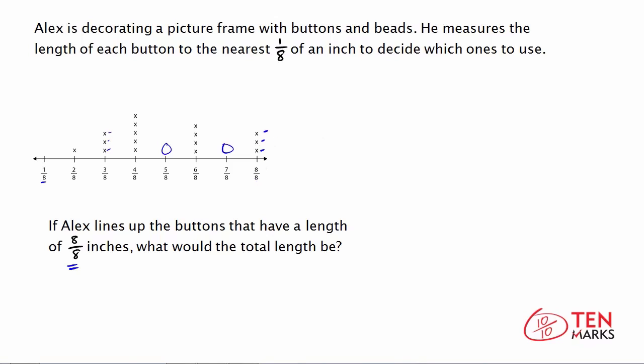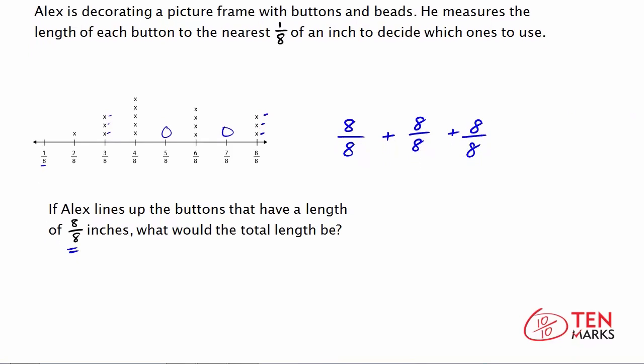Now he wants to line them up and we want to know what the total length will be. So if he lines them up, to find the total length you would add. So you have eight-eighths plus eight-eighths plus eight-eighths. And the total here would be the total length you're trying to solve for.